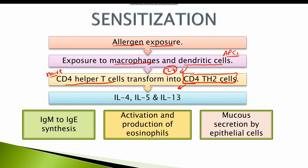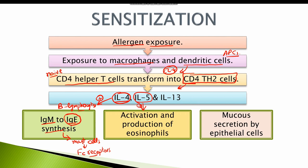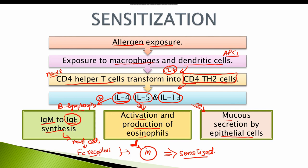CD4 TH2 cells release interleukin-4, which affects B lymphocytes and shifts them from producing IgM antibodies to IgE antibodies. These IgE antibodies, once produced by the B lymphocytes, get attached to the mast cells on FC receptors. CD4 TH2 cells also produce interleukin-5, which is the most potent activator of eosinophils, and also upregulates their production. Interleukin-13 increases the production of mucus by the epithelial cells. The mast cells, with IgE antibodies attached to their FC receptors, are now fully sensitized and the immune system is ready for the next exposure.